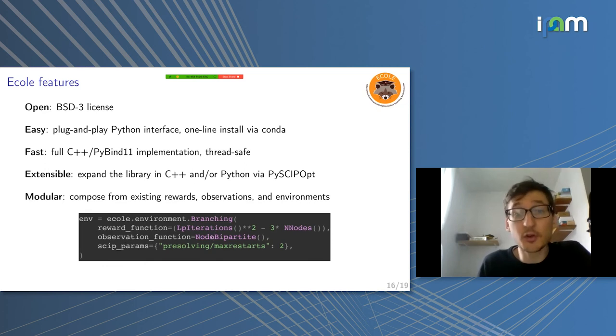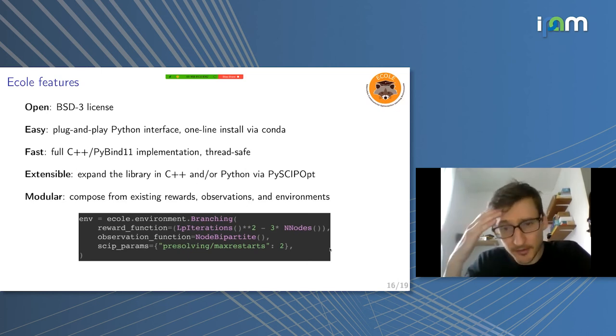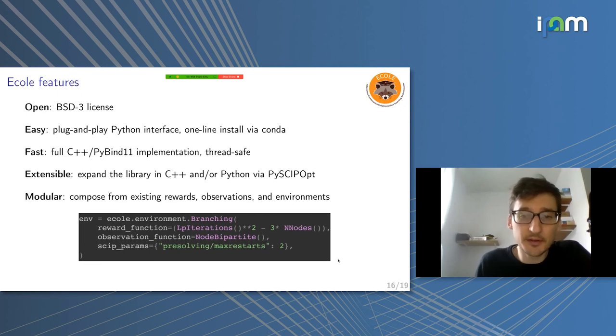You have to pick an observation function. This is a node bipartite observation function, which Laurent presented earlier, which is already implemented in the library. But you can just design your own observation function if you want. If you have some specific features that you want to compute, you can just implement that and fit that into the environment. And optionally, you can also set some parameters for SCIP if you want to put your environment in a specific scenario. Like you can deactivate preprocessing or cuts if you want. So it's very easy to use.